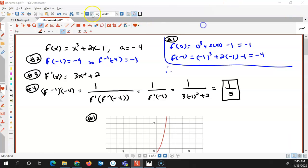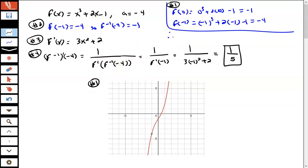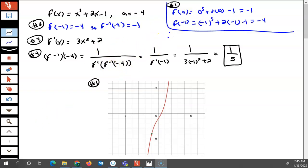All righty, so let's take a look at this problem. Okay, so the first thing that we want to do is we have f of x equals x cubed plus 2x minus 1.